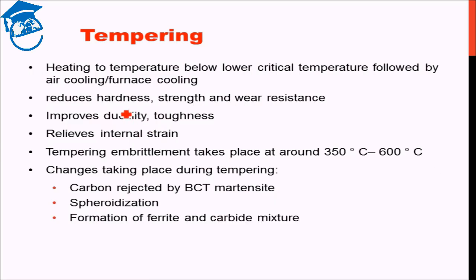In tempering process, what we do is heat to a temperature below lower critical temperature, followed by either air cooling or furnace cooling, depending on how much ductility we want to recover. What this does is that it reduces the hardness and also the strength. In addition to that, it reduces wear resistance also. So these are the compromises that we are doing when we are tempering.